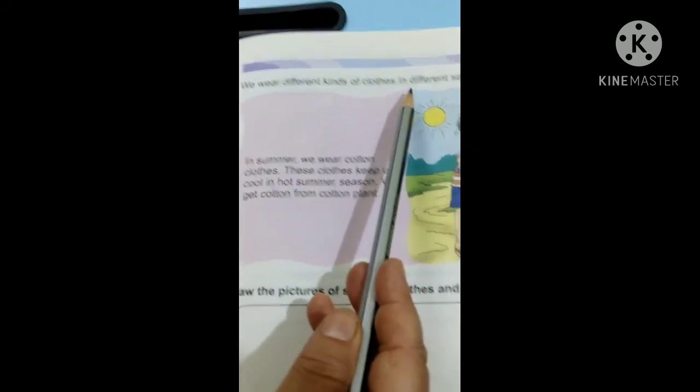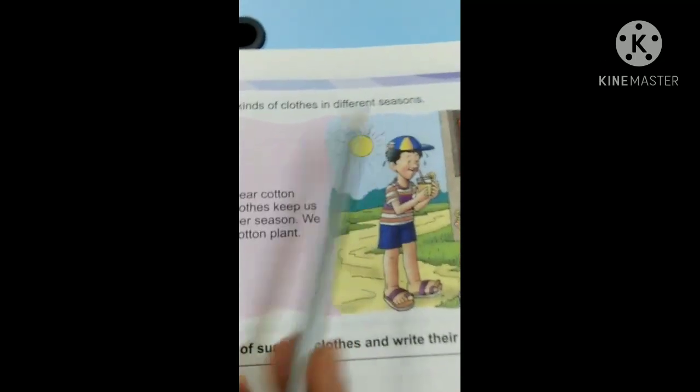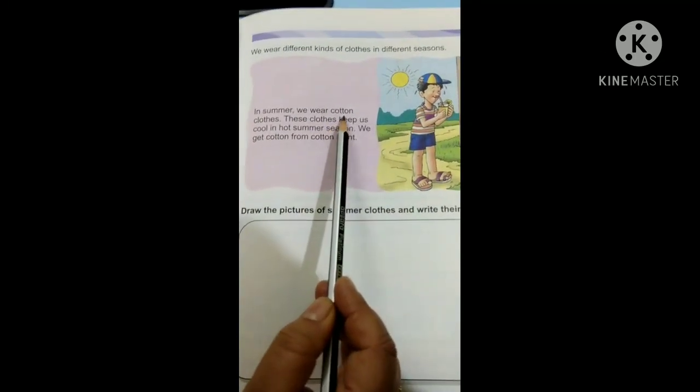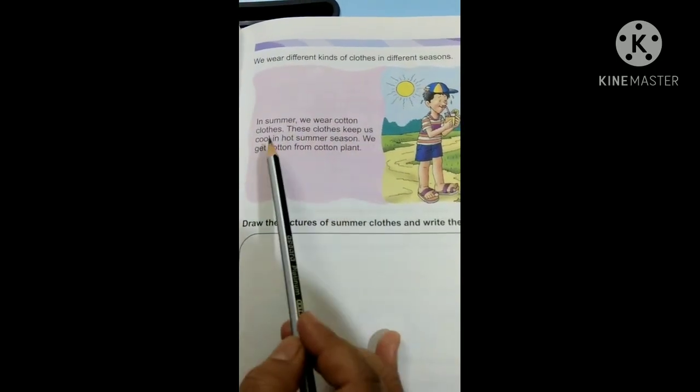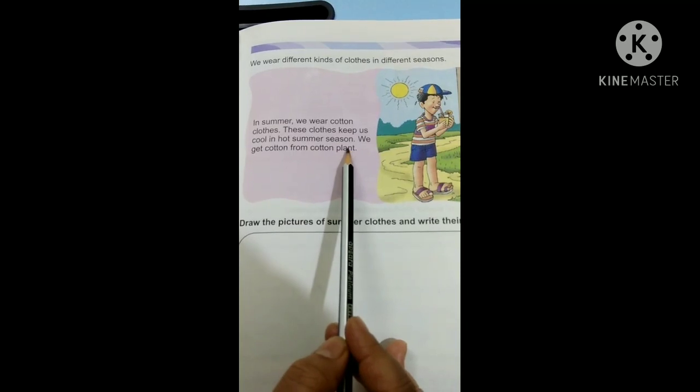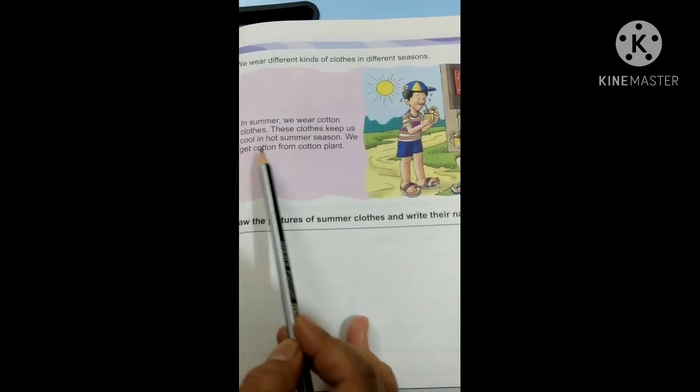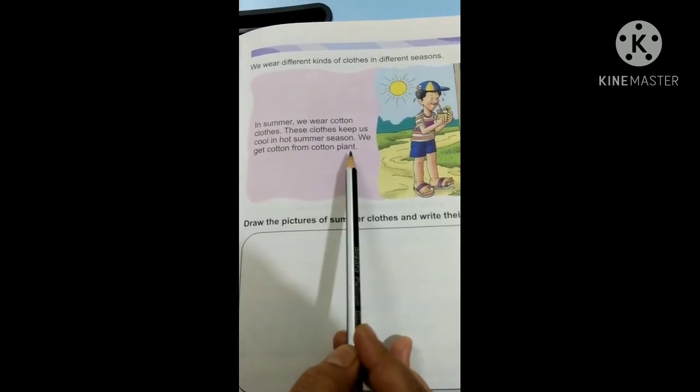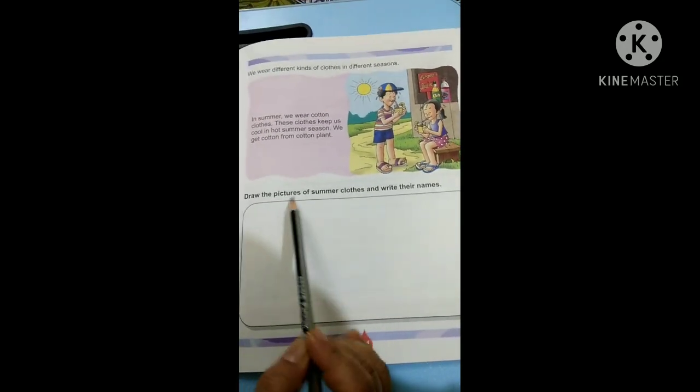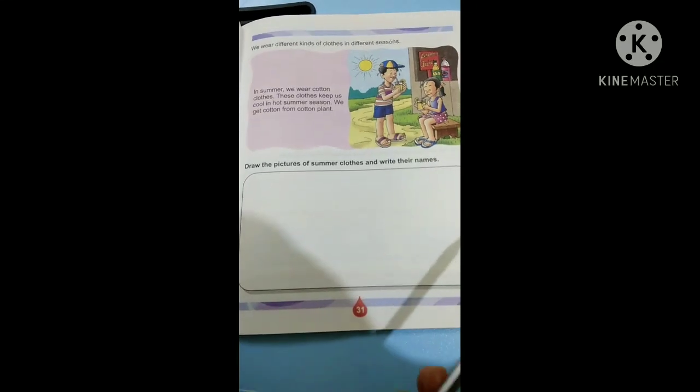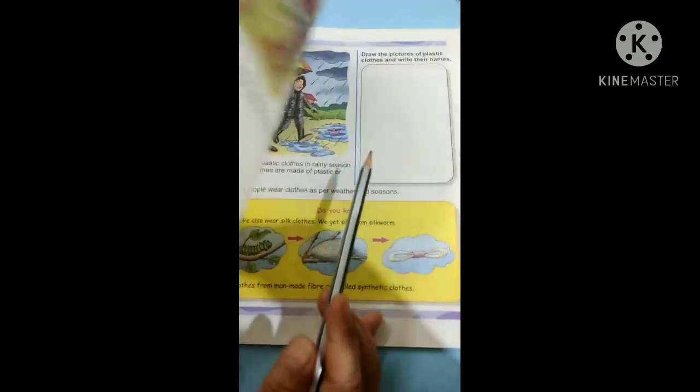We wear different kinds of clothes in different seasons. In summer, we wear cotton clothes. These clothes keep us cool in hot summer season. We get cotton from cotton plant. Now children, you have to draw here the pictures of summer clothes and write their names. That we have done in the last class, isn't it?